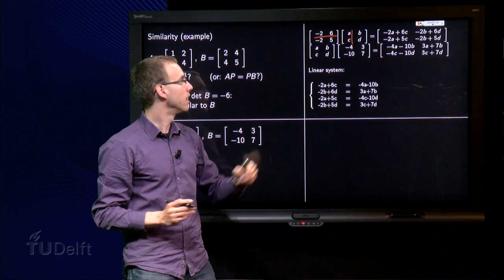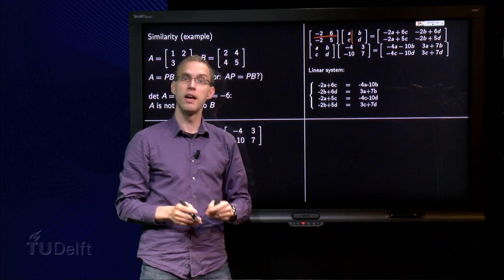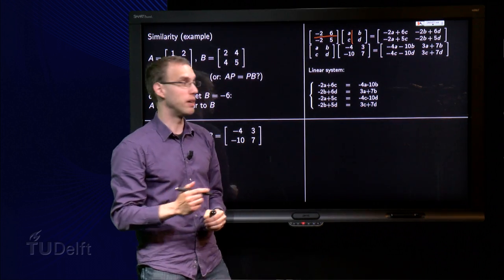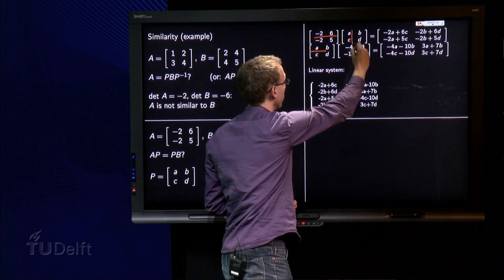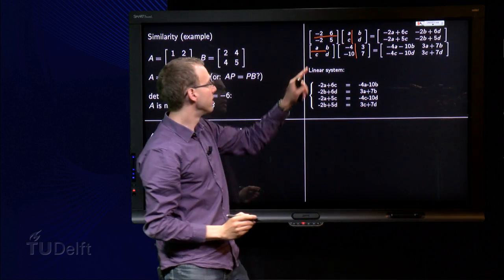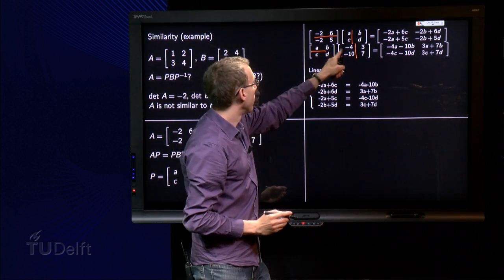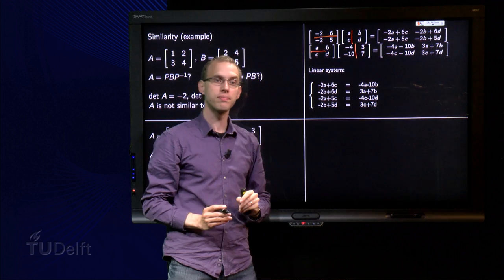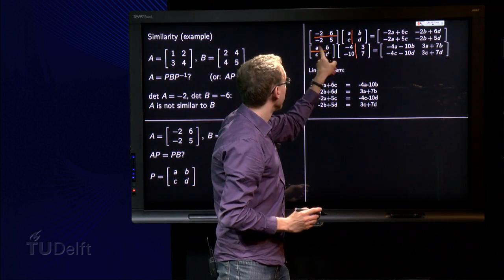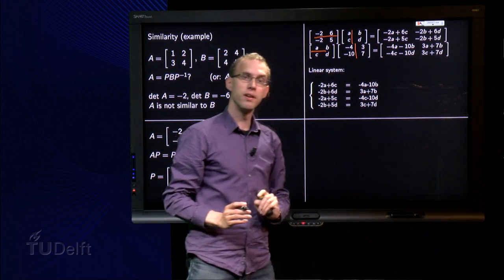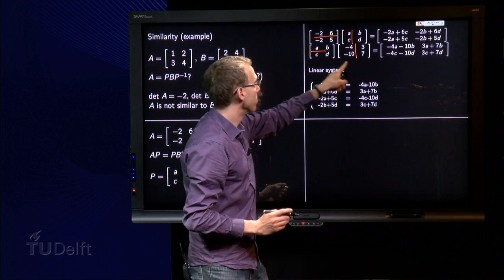Then we also compute P times B, so P times B, and we find minus 4A minus 2B, minus 4C minus 10D, 3A plus 7B, and finally 3C plus 7D over there. And then we have the matrix P times B.